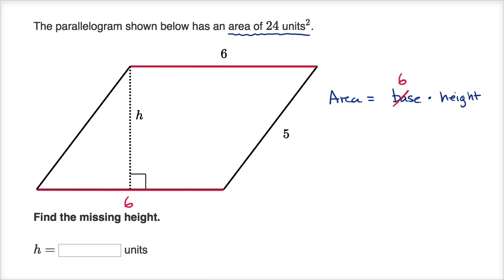And our height is what we want to figure out. So I will just write this is the h that we're trying to figure out. And we know the area. The area is 24 square units.